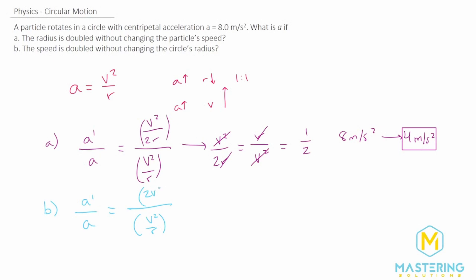So 2 times the velocity, and this will be squared, divided by the radius which isn't changing. When we do the same thing, we have 2 times the velocity squared divided by the radius, multiplied by the radius over v squared.